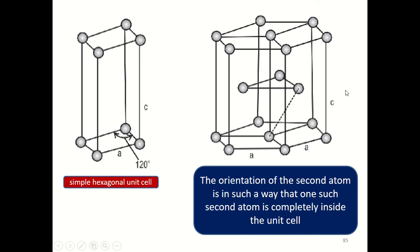The orientation of the second atom is such that one such atom is completely inside the unit cell. We have a hexagonal unit cell — the small one — and three such hexagonal unit cells constitute a hexagonal close-packed unit cell. So in order to accommodate the second atom at the lattice point, the second atom is accommodated in such a way that it is completely inside the unit cell as shown in this figure.